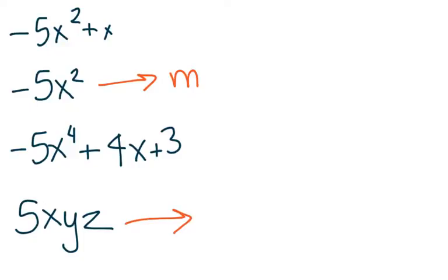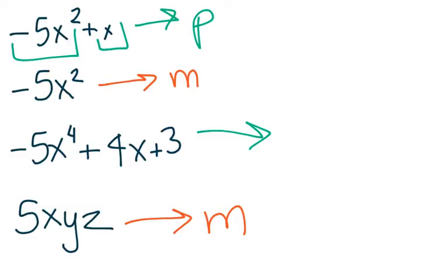This is a monomial right over here. We have just one term, and then these two are polynomials because they have multiple monomials being added or subtracted together.